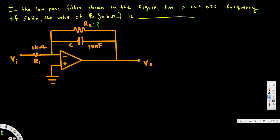Let's look at this problem. This question is asking: in the low-pass filter shown in the figure, for a cutoff frequency of 5 kilohertz, the value of R2 in kilo-ohms is what? So here they are asking for the R2 value.